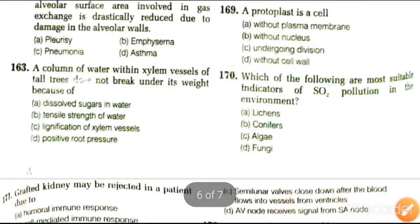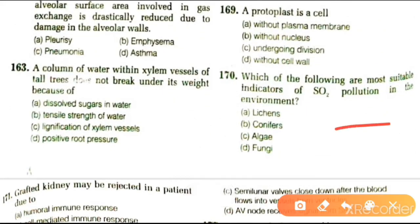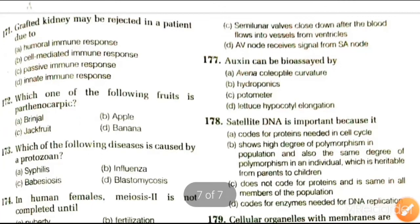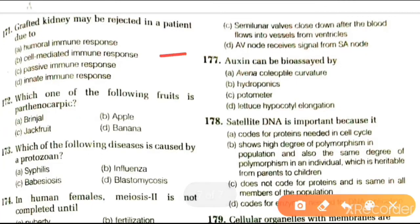Next question: which of the following are the most suitable indicators of SO2 pollution in the environment? Options are lichens, coniferous, allergens, and fungi. The answer is lichens.